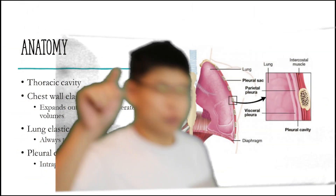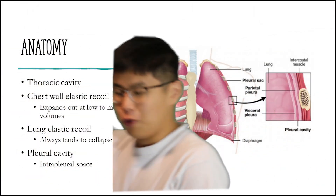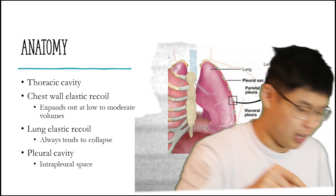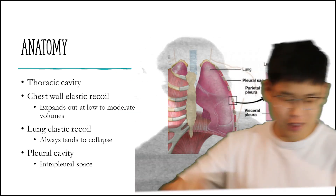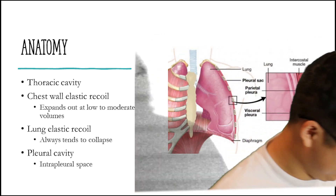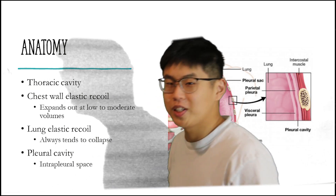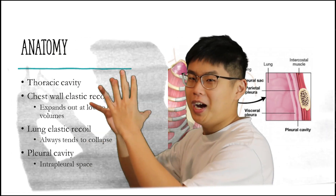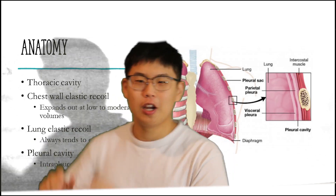Your thoracic cavity is the inside of your chest where your two lungs are. It is made up of two parts: the chest wall and your lungs. Both parts have elastic recoil in opposite directions — the chest wall tends to expand while the lungs always tend to collapse.